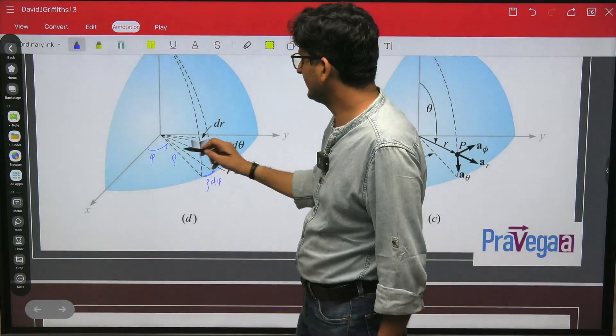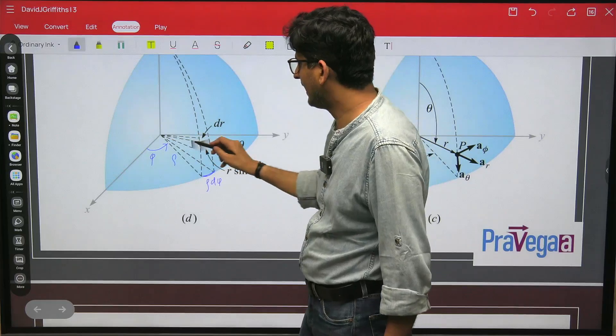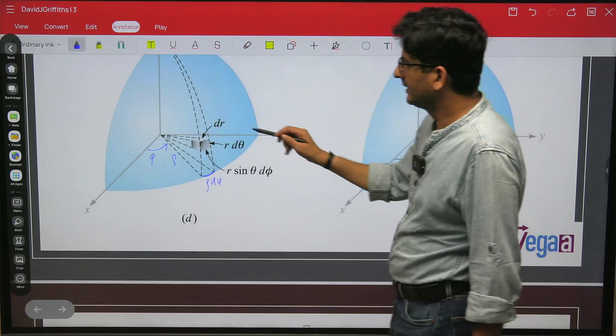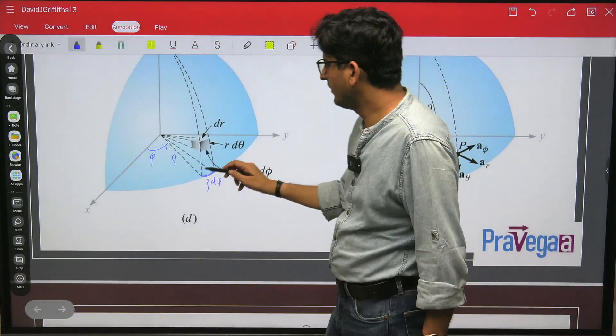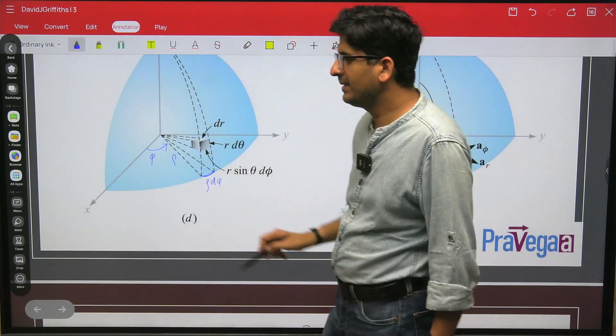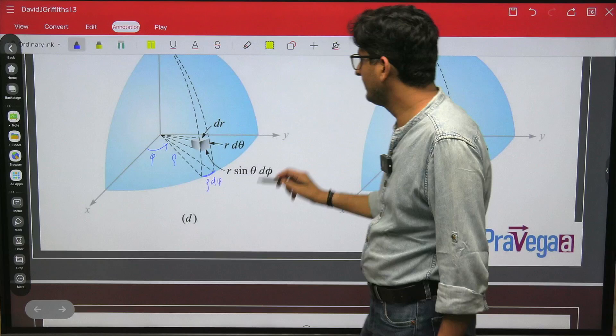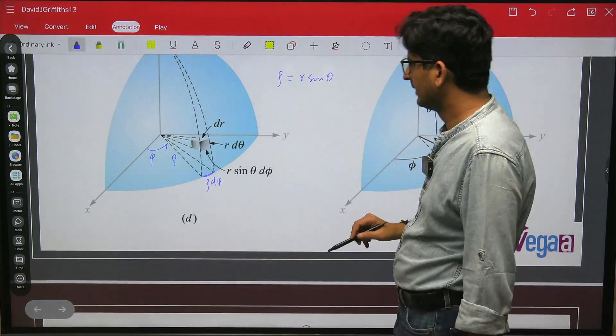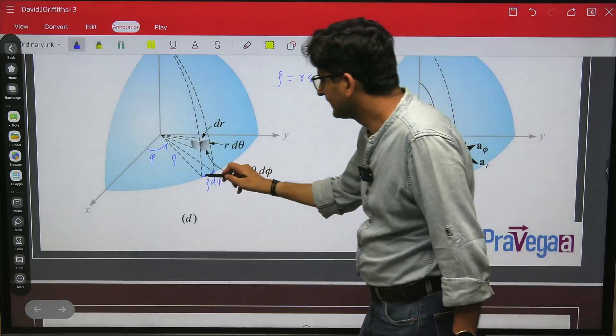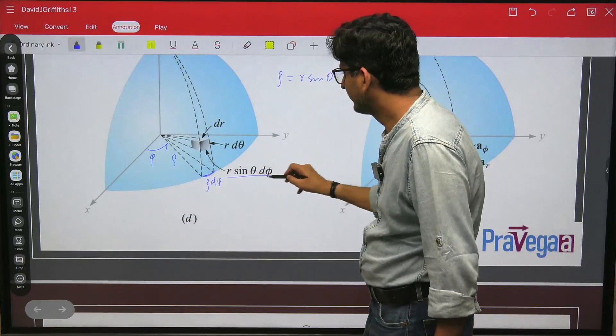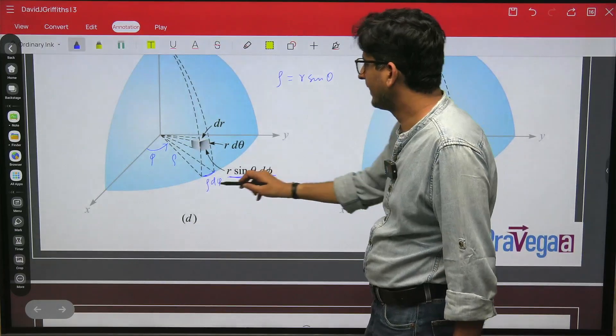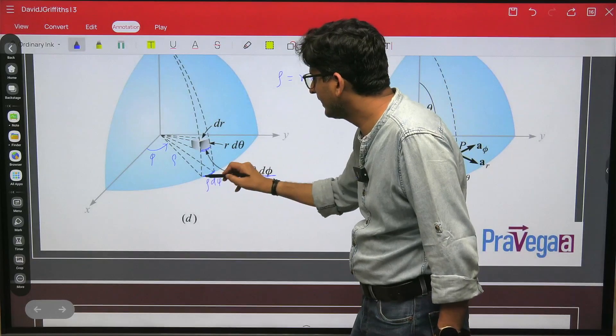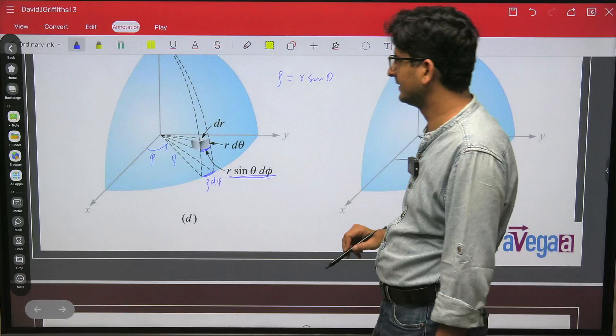So this point is r. So what is rho? This is theta. So what will be rho? Z will be r cos theta and rho will be r sin theta. So your rho will become r sin theta. So what will be this? This will be r sin theta d phi, because rho is r sin theta. And the same thing will be carried out here. This distance is equal to this distance. Correct?